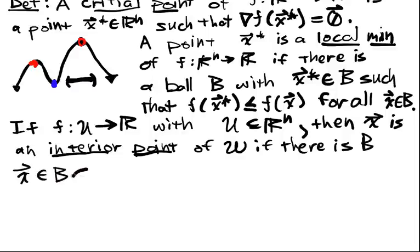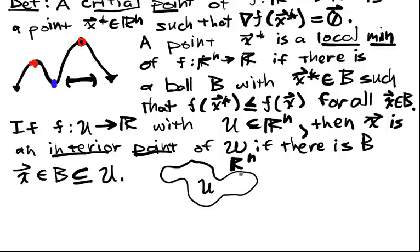such that x is in B, which is contained in U. And the picture is, I've got some set U sitting in Rn, I've got a point x, and around here I've got a small open ball that I can fit, and that's an interior point.